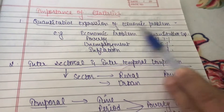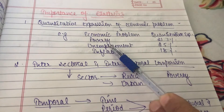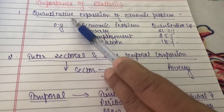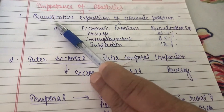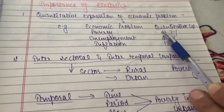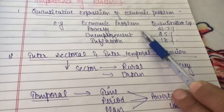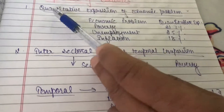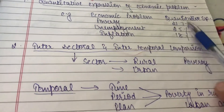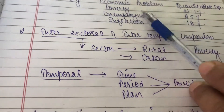We can have a lot of economic problems. The economic problems can be of poverty, unemployment, or inflation. Statistics provides a quantitative expression, meaning it informs us how much poverty is there. In economics, we know that poverty is a problem, but how much? By statistics we come to know the numbers — the quantitative expression — by which we can get the information about how much the problem is.